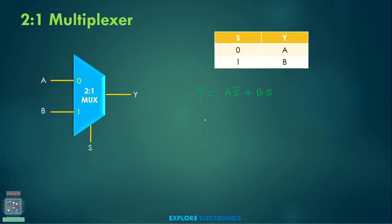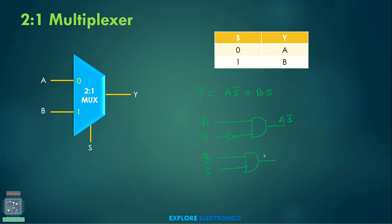How to write the gate-level circuit using this expression? Take input A and generate S̄ using a NOT gate. Put one AND gate to get A·S̄. Similarly, take input B and select line S, put one AND gate to get B·S. Then put one OR gate combining these two, giving the expression A·S̄ + B·S. This represents the 2-to-1 multiplexer using basic gates.